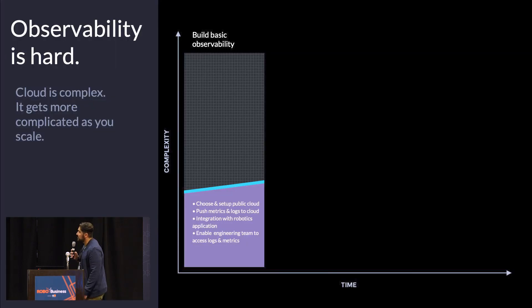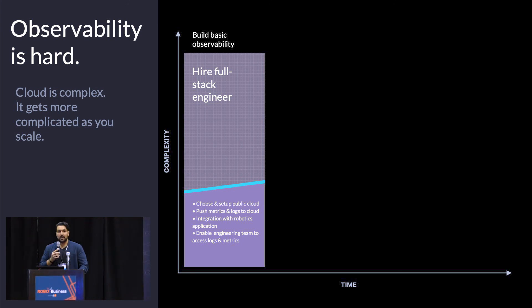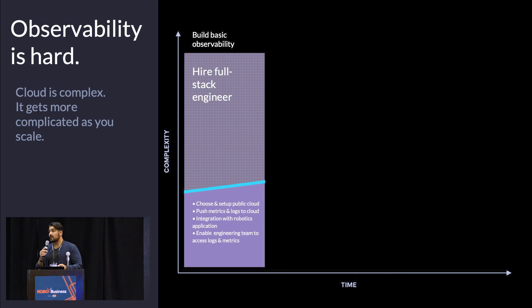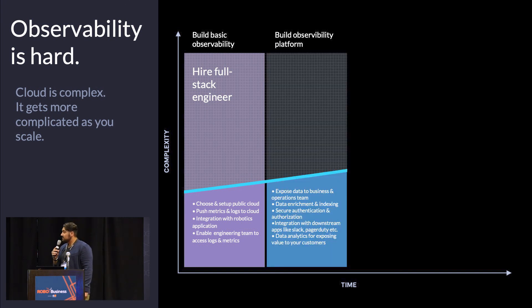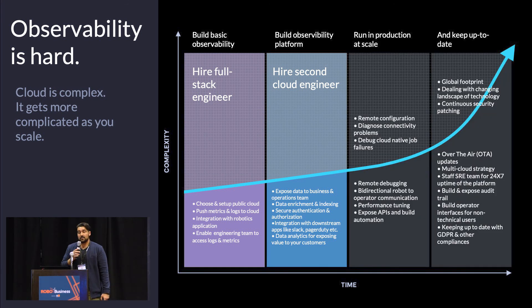Why do we build this? Building this platform is not easy. We typically see a company start by hiring a full stack engineer who has to pick a public cloud — AWS, GCP, Azure — look at products like RoboMaker, start pushing logs and metrics, build a GUI, expose data to different stakeholders, hire a second cloud engineer to support that, face scalability issues, and then security becomes a concern — audits, VPN restrictions. It's a really complex problem, and we've seen companies devote 20-30% of their engineering budget to it.